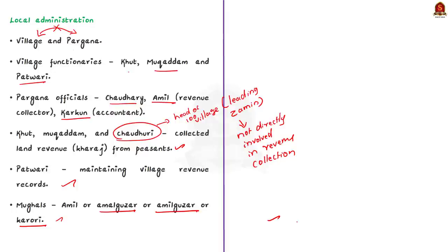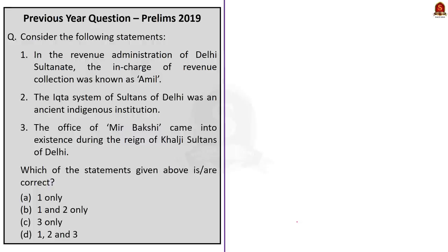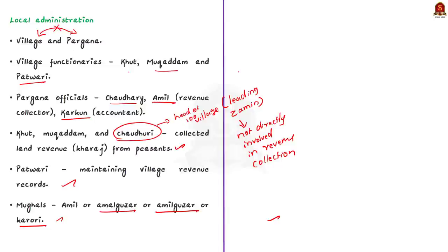Let us come to the question. In the revenue administration of Delhi Sultanate, the in-charge of revenue collection was known as Amil. Yes, correct — we just saw that Amil was the revenue collector at the Pargana level. So the first statement is correct.